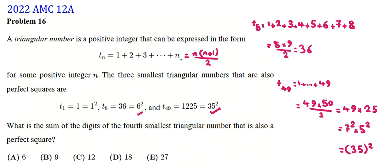The problem asks for the sum of the digits of the fourth smallest triangular number that is also a perfect square. The reason it asks for sum of digits rather than the number itself is that if it asked for the number directly, you could check the answer choices from the smallest and solve the problem without actually working it out. In some problems they say product of digits or sum of digits so that you cannot use the choices directly.